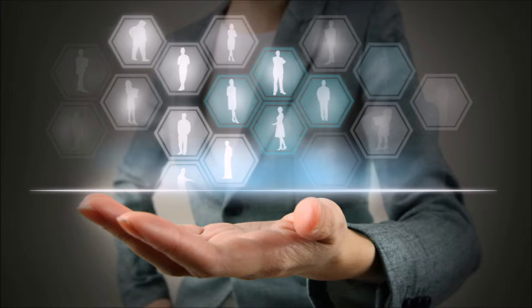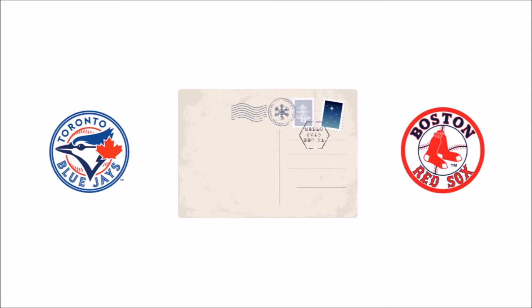These customizations can be obvious, such as including the name of the recipient, or they can be more subtle. For example, say you own a chain of sporting goods stores and want to send your customers a postcard promoting a sale. With variable data printing, you could have the postcards going to customers in Toronto feature jerseys of Toronto sports teams, and customers in Boston receive cards with images of jerseys for Boston sports teams.